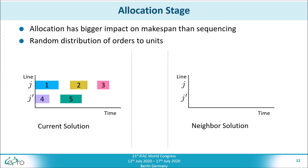Another important aspect of metaheuristic optimization algorithms is the generation of neighbor solutions. As already discussed, our scheduling algorithm is divided into two different stages: in the first stage, the allocation of orders to lines is performed, and in the second stage, the sequencing of these orders within the lines takes place.